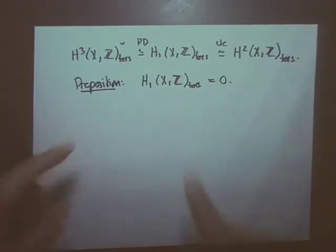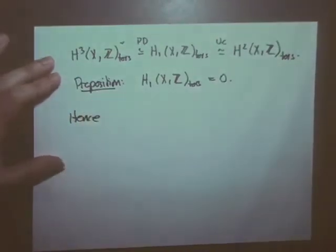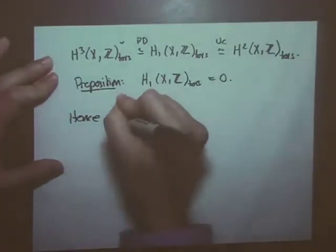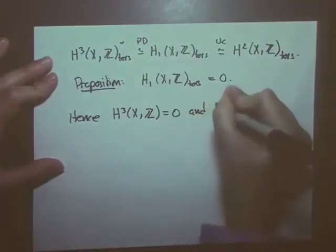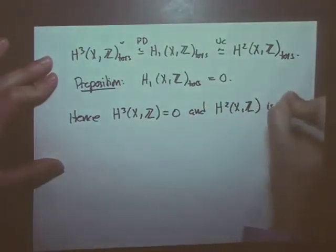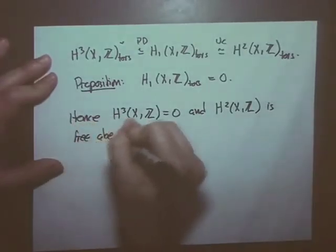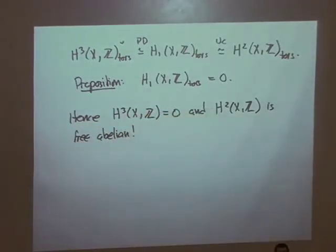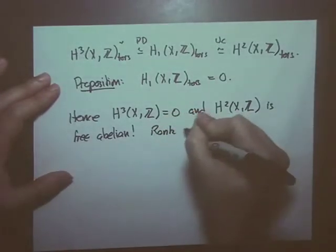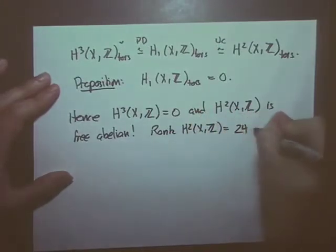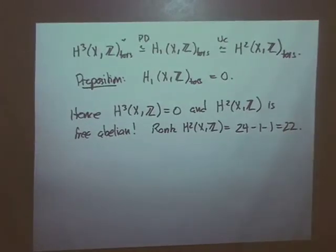This is awesome because it means not only was H3 torsion, there's no torsion — so H3 is zero and H2 is free abelian. What's the rank? The Euler characteristic was 24, and we had zeros at H1 and H3, but H0 and H4 were one each. So the rank of H2(X, Z) must be 22.